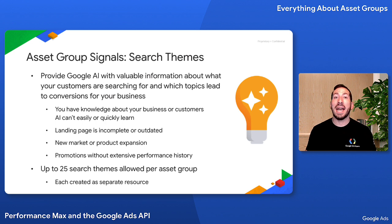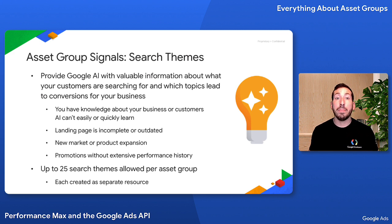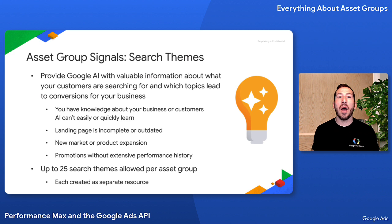Search themes in Performance Max allow you to provide Google AI with valuable information about what your customers are searching for and which topics lead to conversions for your business. Search themes can be especially helpful if you have knowledge about your business or customers that AI can't easily or quickly learn — for example, if your landing page doesn't have complete details about your products, you've just expanded into a new market or launched a new product, you're launching a new promotion for the holiday season, or you want to expand your reach within Performance Max and ensure comprehensive coverage on important business themes.